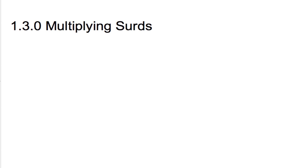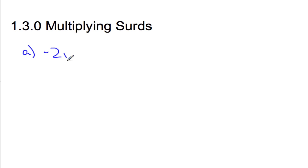Okay, Mr. Rops and Mr. Coe. We are multiplying surds today. So when we multiply surds, let's get an example here. Here's the first example. I'm going to take negative 2 square root 5, and I'm going to multiply that times 3 root 3.